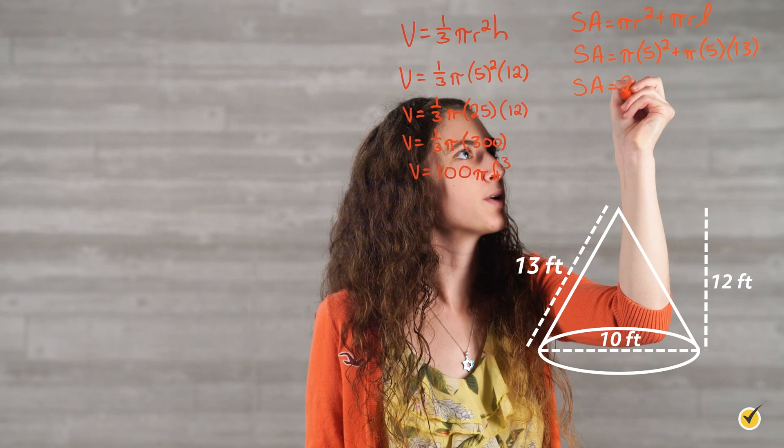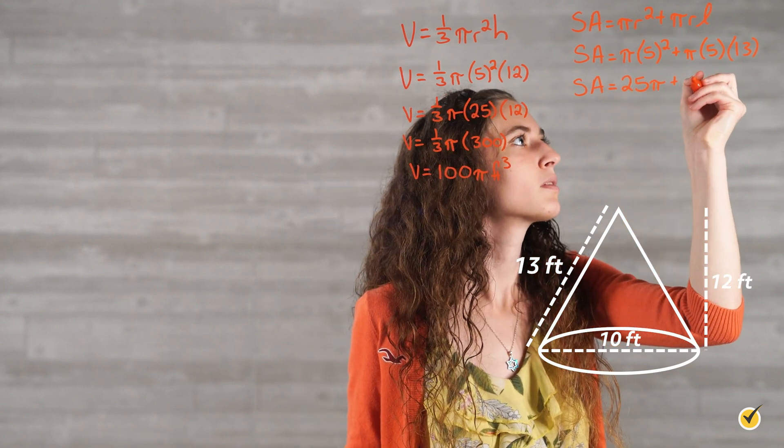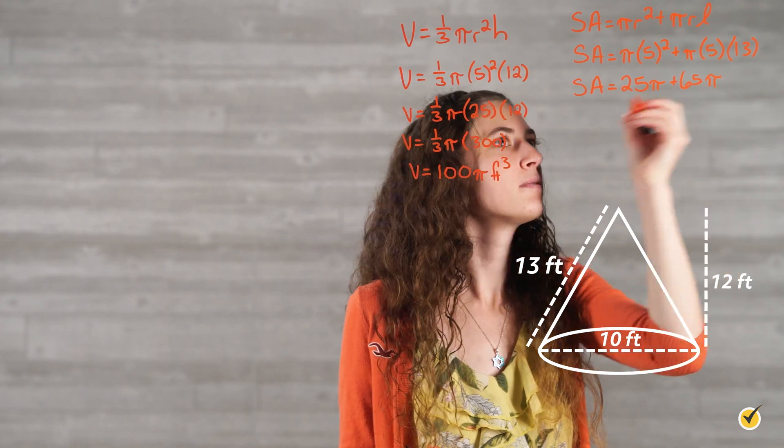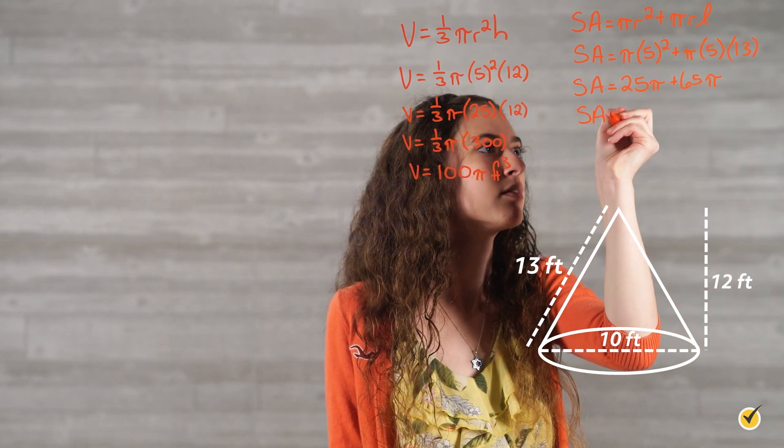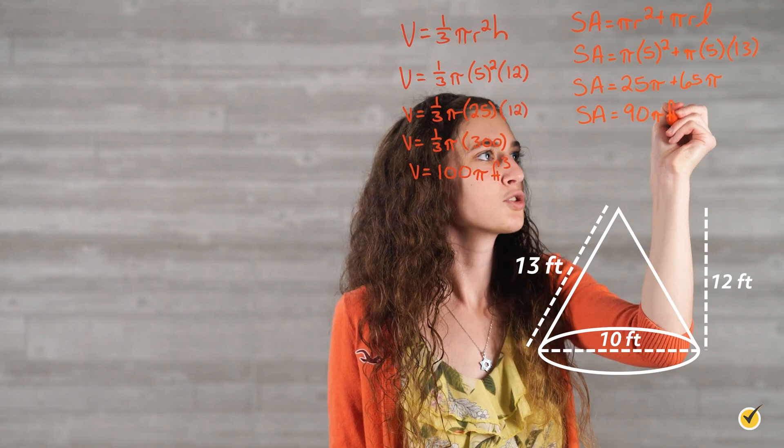Surface area is equal to 25 pi plus 65 pi, which is equal to 90 pi square feet.